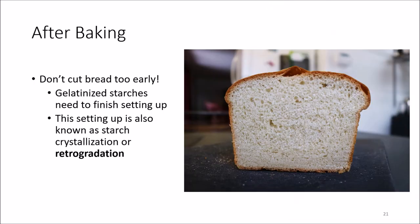Your bread is finished baking — a beautiful golden crust with air bubbles trapped in the gluten network. An important note: unless you plan to eat the entire loaf right away, you shouldn't cut into it too early, because this releases moisture and compromises the bread structure. The gelatinized starches haven't finished cooling and setting up. As soon as bread comes out of the oven, the gelled starches begin to recrystallize, starting the process of retrogradation.